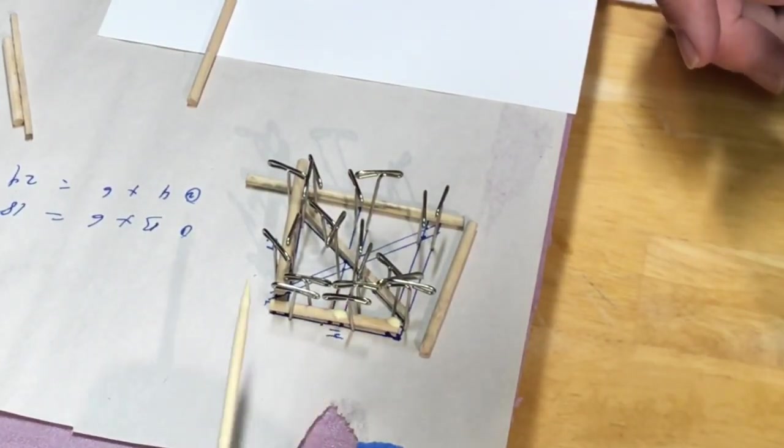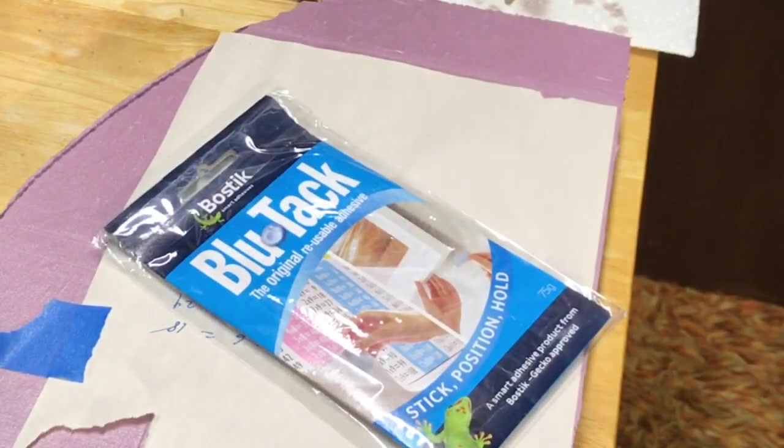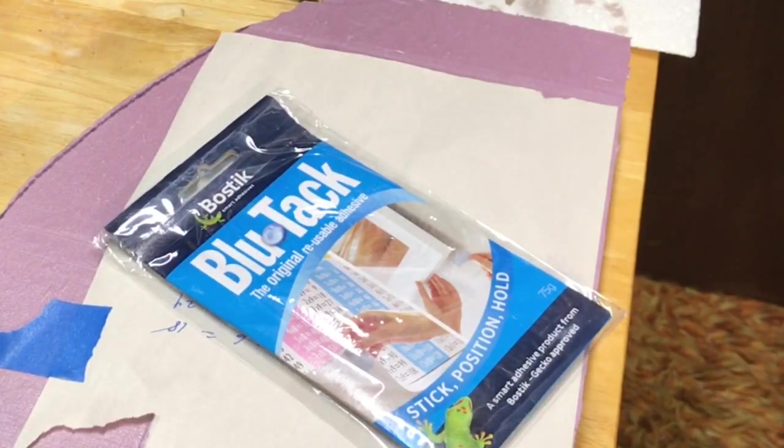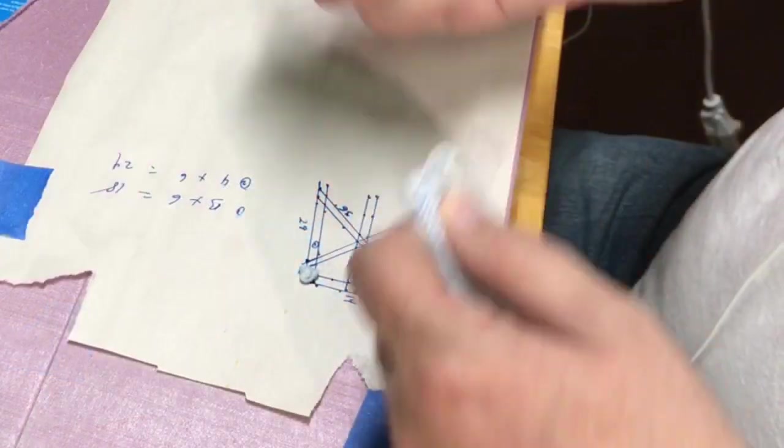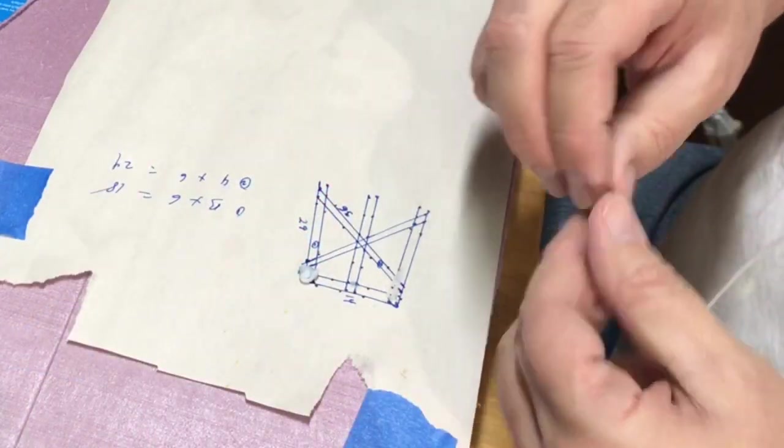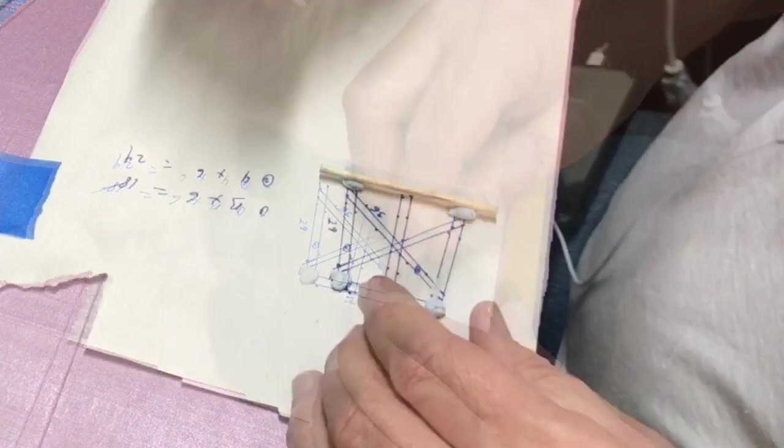This worked but not great. A better alternative was to use a piece of blue tack to hold the pieces in place. It was much easier to get the glue onto the pieces without the pins in the way.